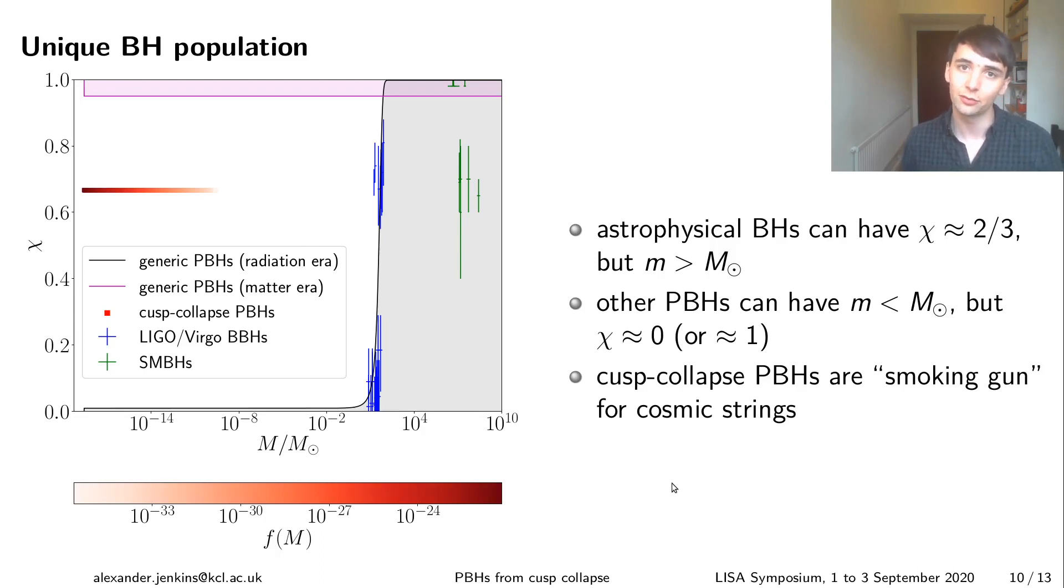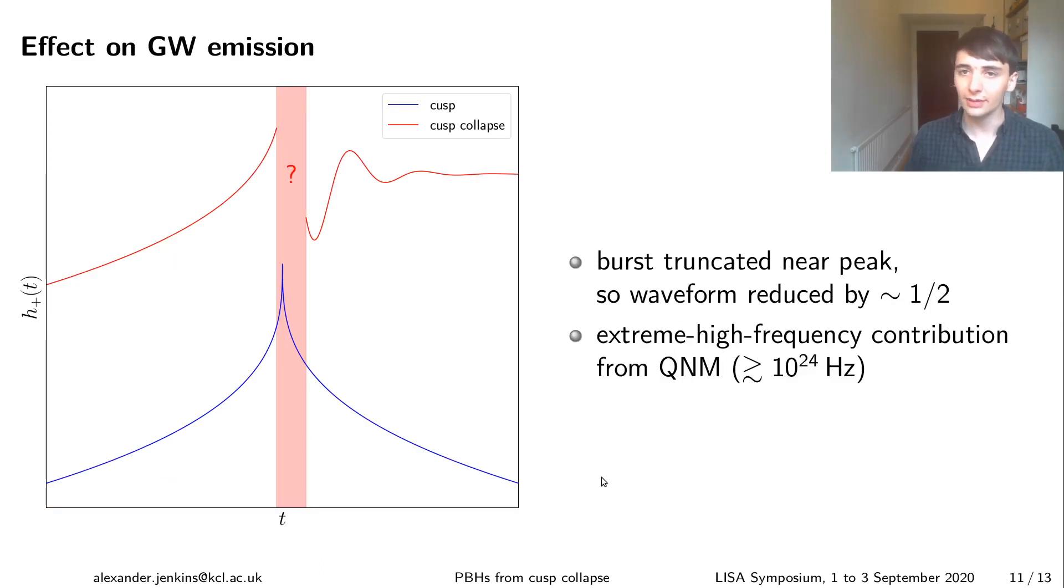So these surviving black holes make up a completely unique population of black holes right through the combination of their small masses which makes them different from astrophysical black holes but also their large spins which makes them different from most other primordial black holes. The sort of standard mechanism for forming primordial black holes is you just have a large over density in the early universe which collapses but then it is born with essentially zero spin. It can gain spin by accreting material but that's only efficient if they're sufficiently massive. So this grey region is sort of the allowed region of parameter space for conventional primordial black holes. The blue and green marks are for different populations of astrophysical black holes but you can see that this red band for the cusp collapse black holes is clearly identifiable.